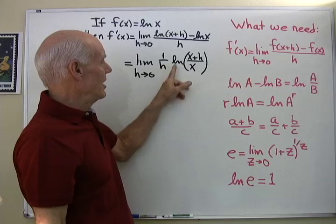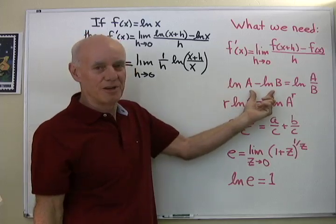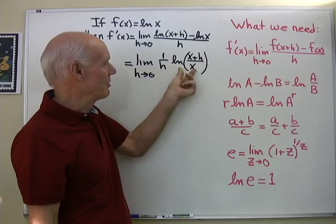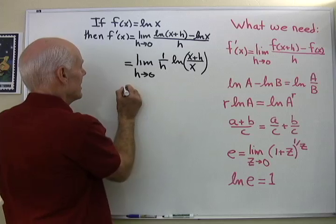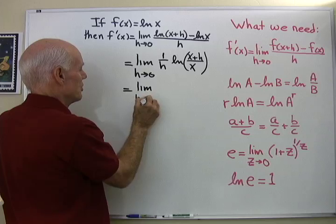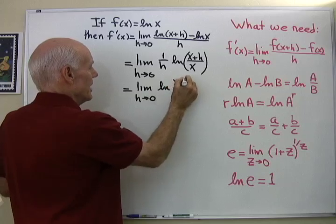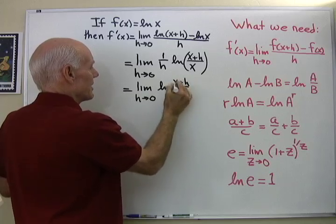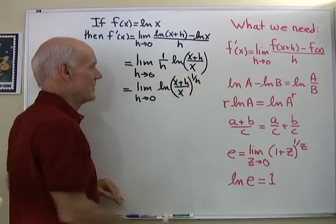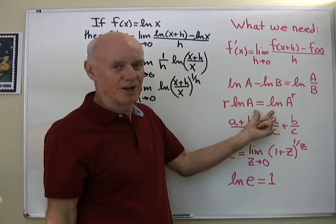Now, 1/h is a coefficient on the logarithm, so using the log power property I bring it up as an exponent. This gives lim(h→0) of ln((x+h)/x)^(1/h). That's the coefficient becoming an exponent — that's the log property.